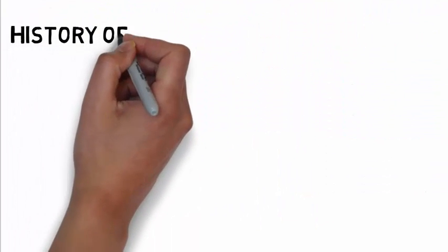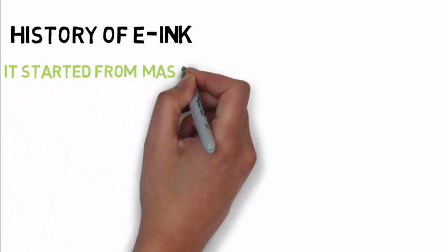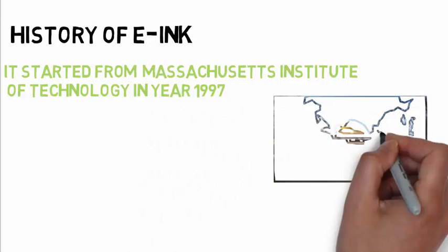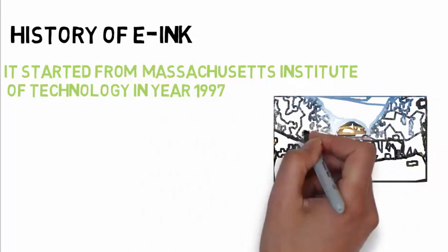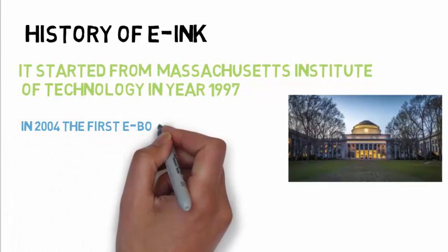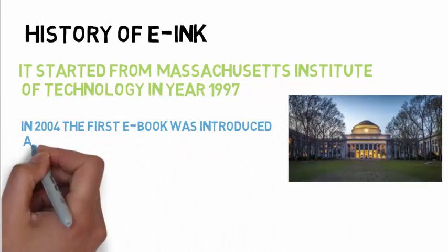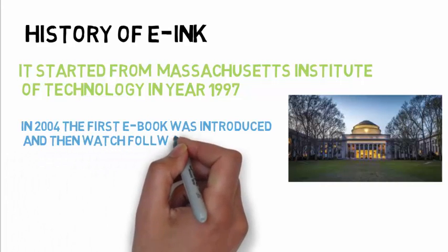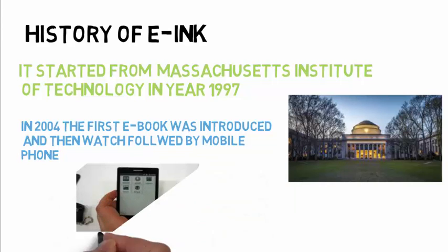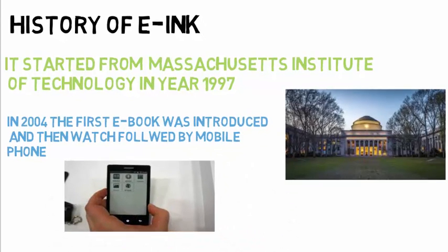Before looking into the future of e-ink, let's travel to the past of it. The research was started at MIT in the year 1997, and after research and hard work, the institute developed the e-book that came in the year 2004. The following year display watch was invented, and that was followed by mobile phone. One example of an e-paper mobile phone is Motorola F3.